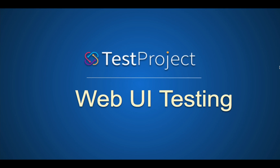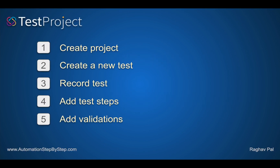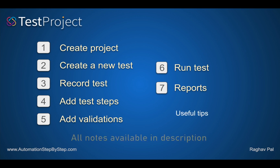Hello and welcome to this session. We will start creating a web UI test in TestProject, and this is going to be very easy and interesting. The process is very straightforward — we have to do five steps: create a project, create a new test, record the test, add the test steps, and finally add the validations. I will also show you how to run the test, see the reports, and share some useful tips throughout this session.